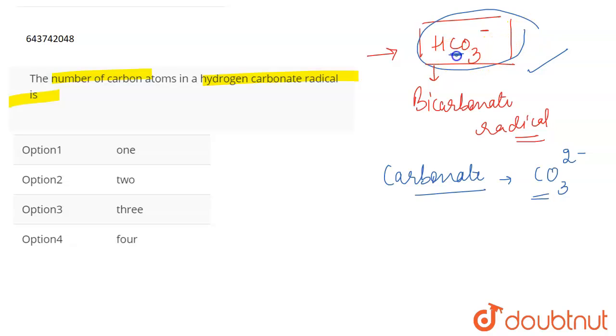So as you can see that the number of carbon atom is only 1. The number of carbon atom which is present in the bicarbonate radical or the hydrogen carbonate radical is just 1. So the correct answer for this question has to be option 1 which is 1. That's all for this particular question.